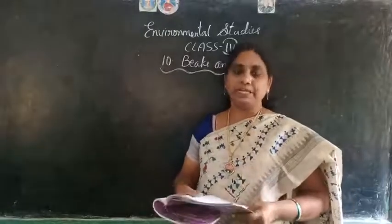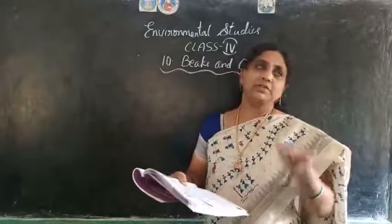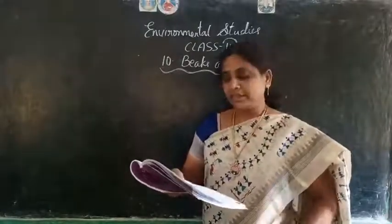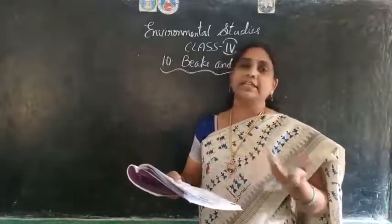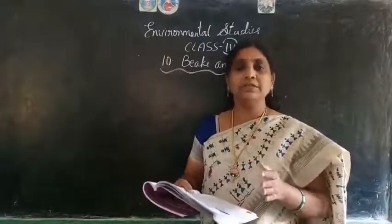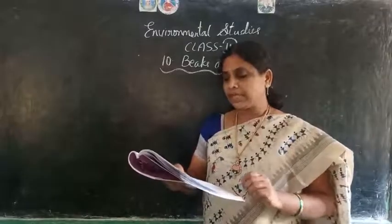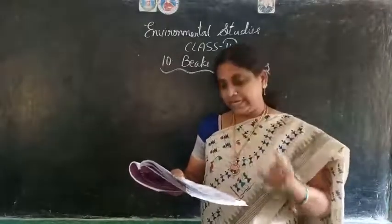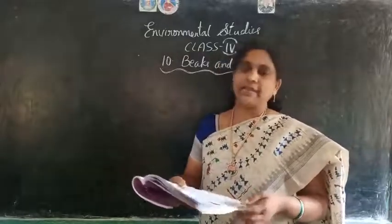The last type is the Swiss army knife beak. Crows have multipurpose beaks — they use their beaks to eat fruits, seeds, insects, fish and other animals. This bird can eat anything, so its beak is designed to be multipurpose.